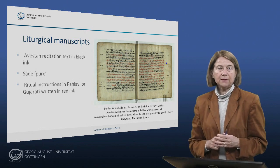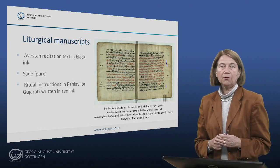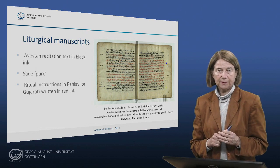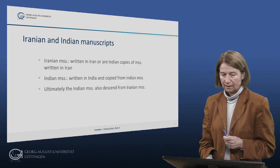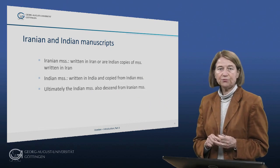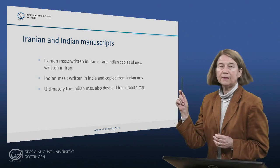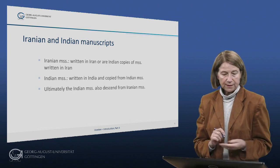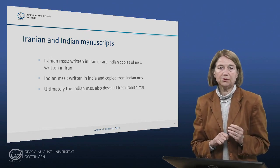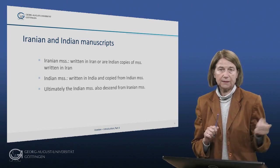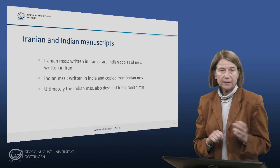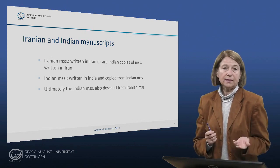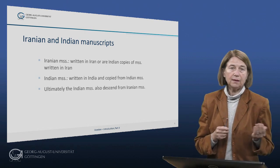These manuscripts give us full descriptions of the ceremonies both in terms of the text to be recited and of the actions to be performed. The liturgical manuscripts fall into two major groups: Iranian and Indian. The manuscripts of the Iranian group were written in Iran or are copies of manuscripts written in Iran and copied in India. Manuscripts of the Indian branch were copied in India from Indian originals. Ultimately, however, the Indian tradition derives from the Iranian tradition.